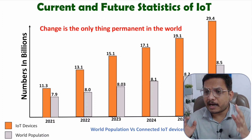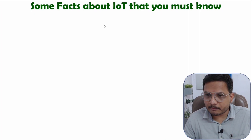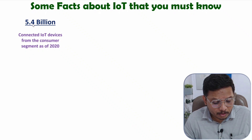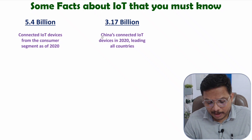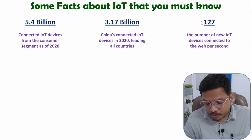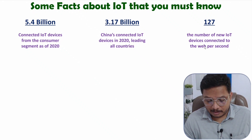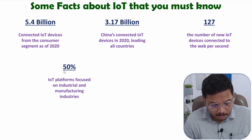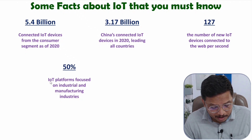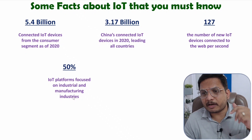Now I'll explain a few very interesting facts regarding IoT with respect to 2020. In 2020, there were around 5.4 billion IoT devices from the consumer segment. China was the leader, with around 3.17 billion IoT devices connected from China. One interesting fact: in a single second, around 127 new IoT devices are connected on the internet. Also, 50% of those IoT devices — or IoT platforms — are focused on industrial and manufacturing industries.